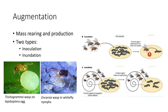Inundative releases involve mass releases of natural enemies at frequent intervals to suppress the pest population. Clear examples of this are entomopathogenic organisms such as certain bacteria and fungi used as microbial insecticides. Augmentative releases are particularly appropriate for pests that have good dispersal abilities with high reproductive rates — features that make them unsuitable candidates for classical biological control.